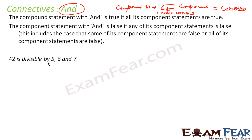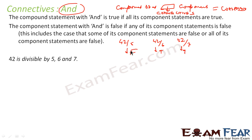For example, let's take: 42 is divisible by 5, 6, and 7. So there are three components here: 42 divisible by 5, 42 divisible by 6, and 42 divisible by 7. If you see, 42 divisible by 5 is false, 42 divisible by 6 is true, and 42 divisible by 7 is true. But since one statement is false, the whole compound statement is false. All the statements have to be true to make sure that the compound statement is true.